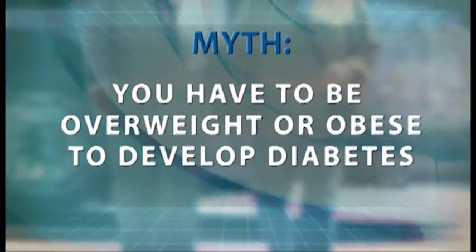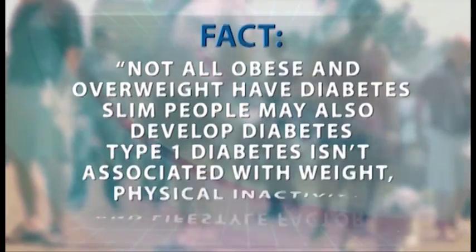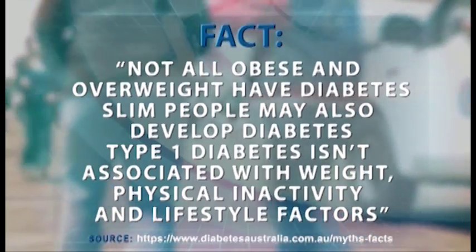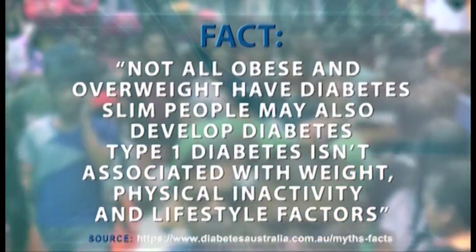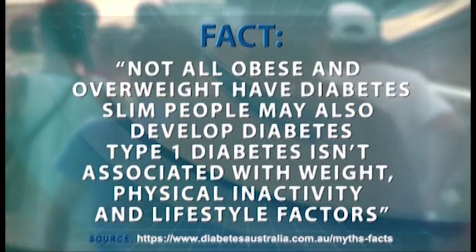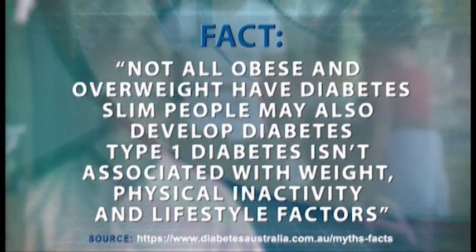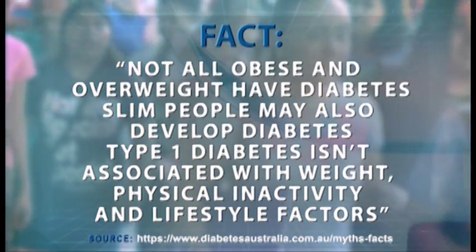Myth: Ang mga overweight at obese lamang ang may posibilidad na magkaroon ng sakit na diabetes. Fact: Ang pagiging overweight o obese ay isa lamang sa mga posibleng magiging sanhi ng pagkakaroon ng diabetes. Pero hindi lahat ng matataba ay may diabetes. Pati ang mga payat ay pwedeng magkaroon ng type 2 diabetes. Ang type 1 diabetes ay hindi maaaring maiwasan — ang pagkakaroon nito ay walang kinalaman sa timbang, physical inactivity, at iba pang lifestyle factors.